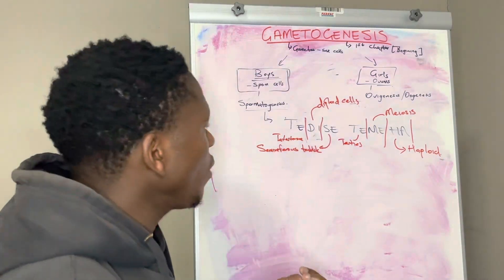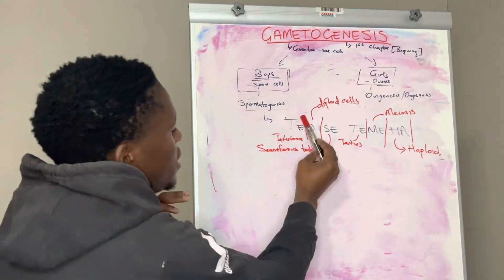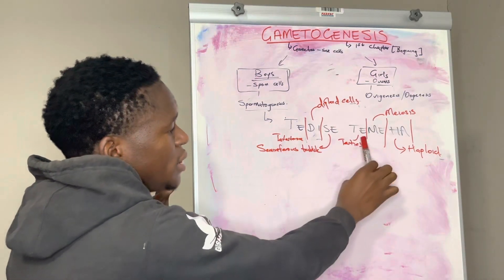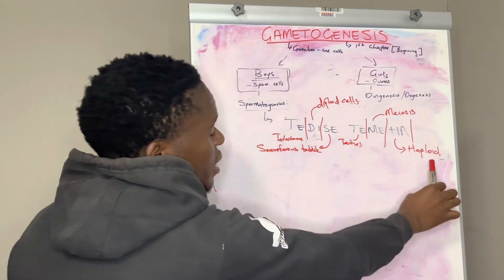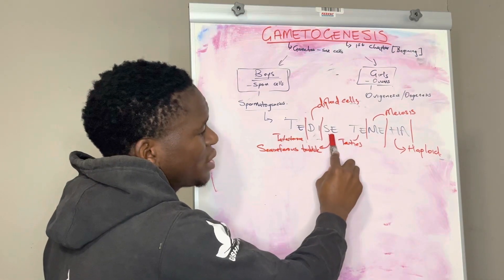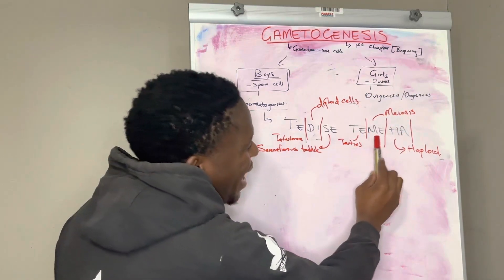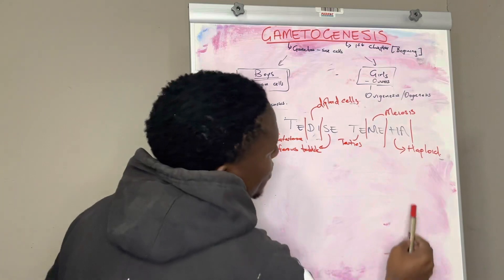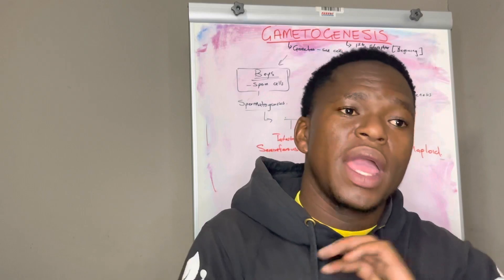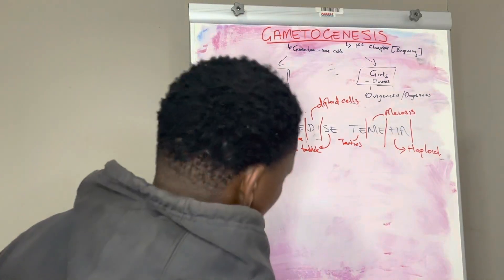Let me break down the mnemonic TEDISHA: T-E is for testosterone, DI for diploid cells, SE for seminiferous tubules, T-E for testis, ME for meiosis, HA for haploid. So: under the influence of testosterone, diploid cells in the seminiferous tubules — located in the testis — will undergo meiosis to form haploid sperm cells. That is the entire process of spermatogenesis.